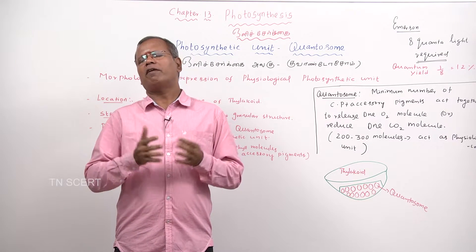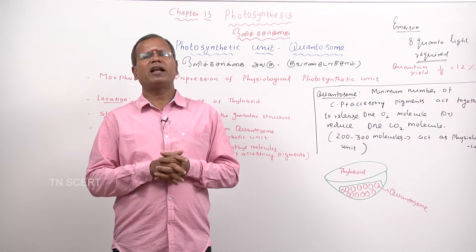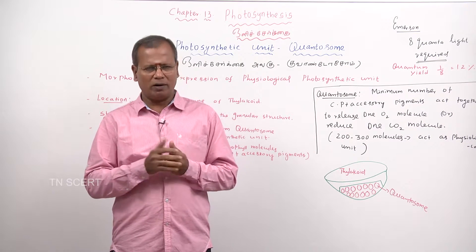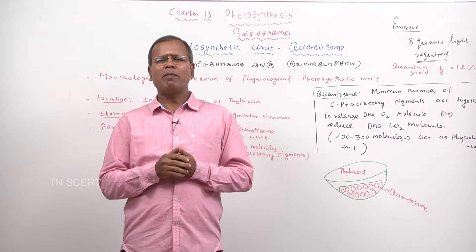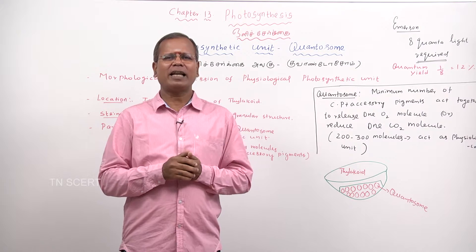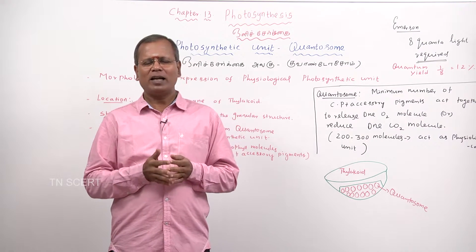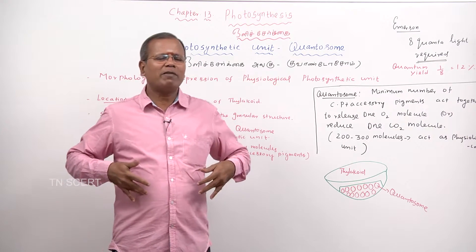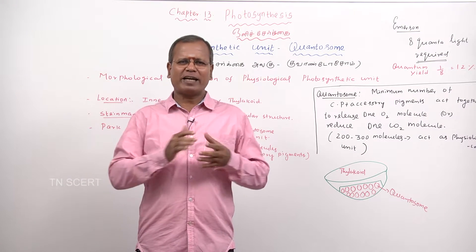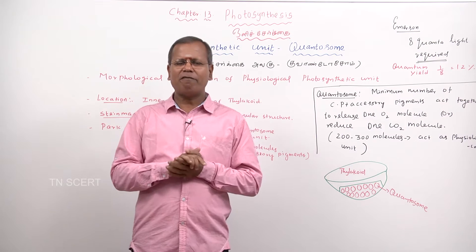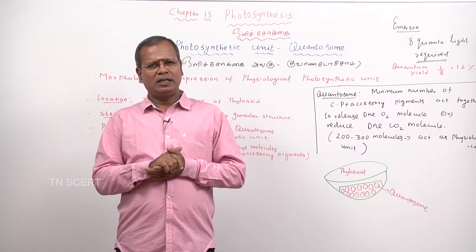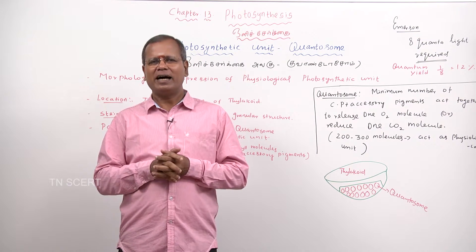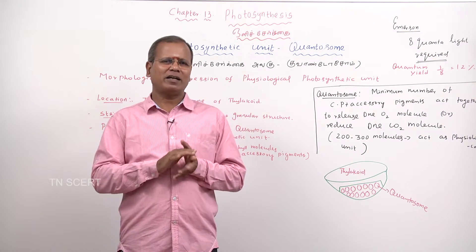The structural and functional unit of the nervous system is said to be neuron. Similarly, the structural and functional unit of the kidney is Nephron.